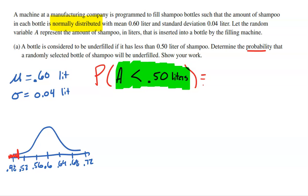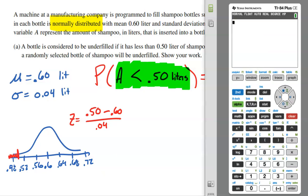Our calculator doesn't understand 0.5 liters directly, so we need to find the Z-score. Take the value in question, subtract the mean, divide by the standard deviation: (0.5 − 0.6) ÷ 0.04.